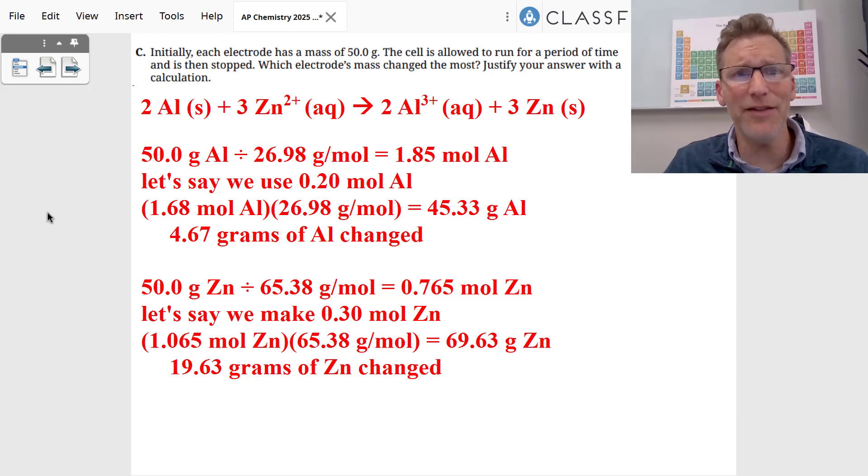Part C was very interesting. They gave us 50 grams of each electrode, the aluminum and the zinc, and it allows to run for some period of time. And they want to know which electrode changed the mass the most, and they wanted us to justify our answer with a calculation. So I did this a little bit different than maybe some students did it. I found the number of moles of aluminum, the moles of zinc.